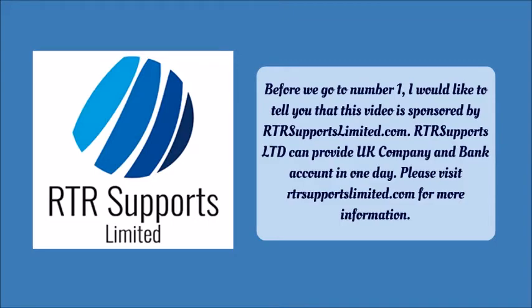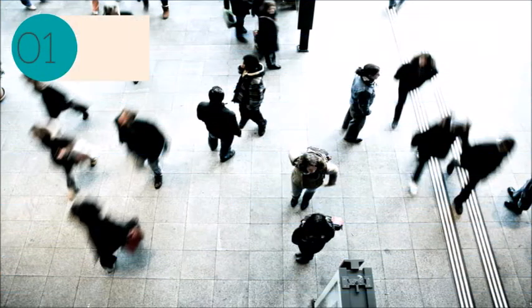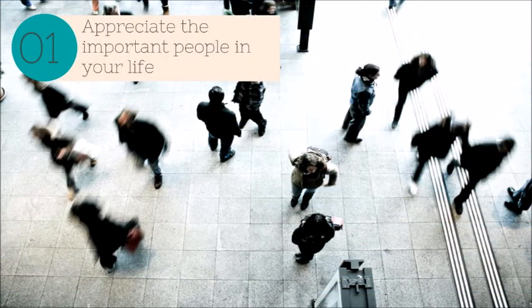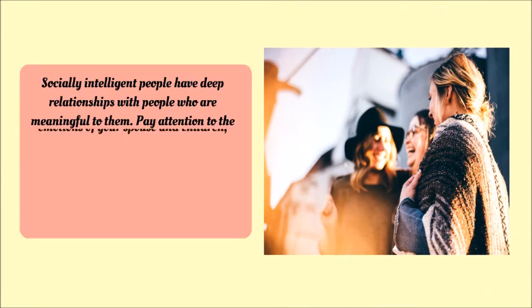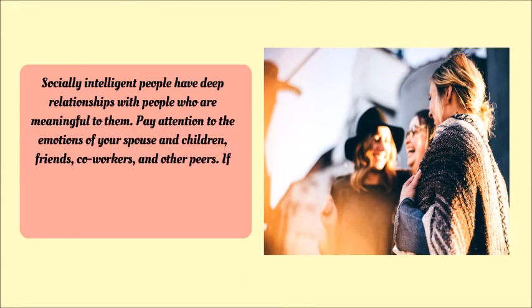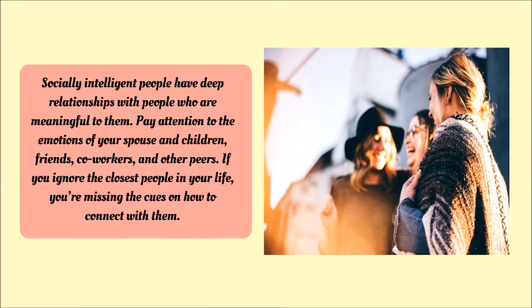Number one: appreciate the important people in your life. Socially intelligent people have deep relationships with people who are meaningful to them. Pay attention to the emotions of your spouse, children, friends, co-workers, and other peers. If you ignore the closest people in your life, you're missing the cues on how to connect with them.